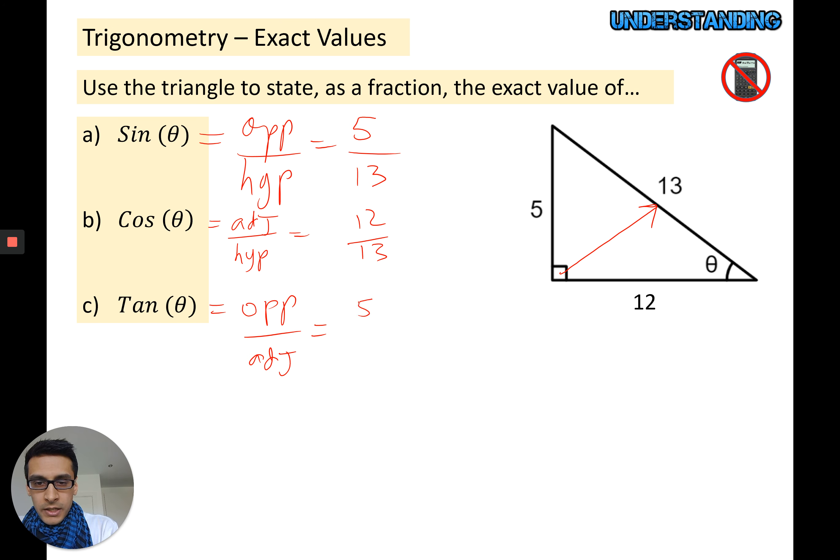So cos theta, the adjacent side is 12, hypotenuse is 13. And tan theta equals opposite over adjacent, which is 5 over 12.